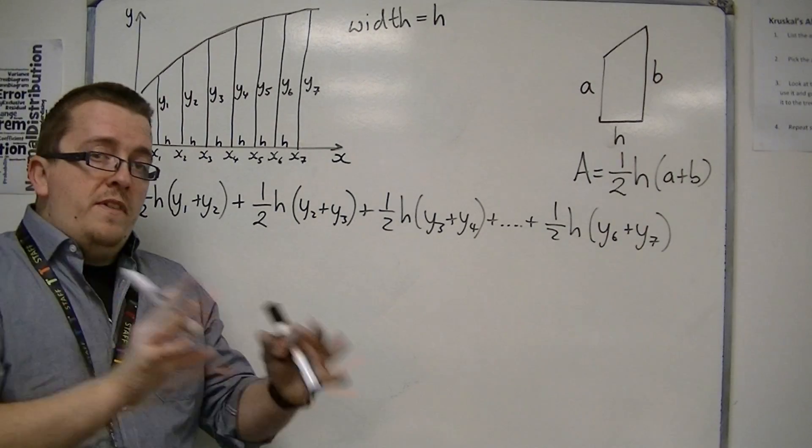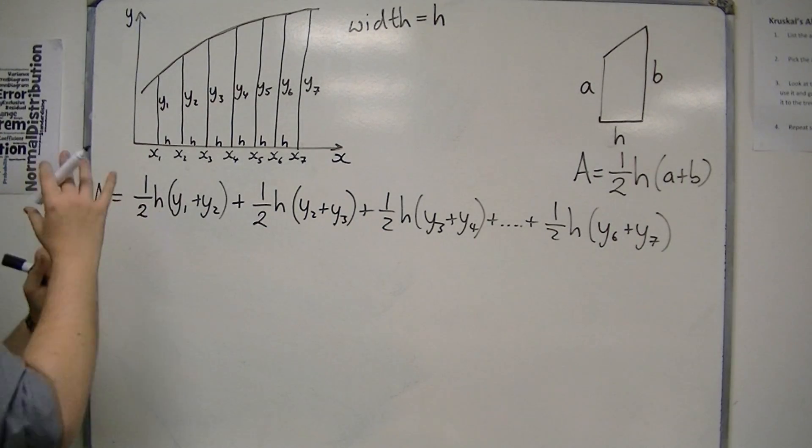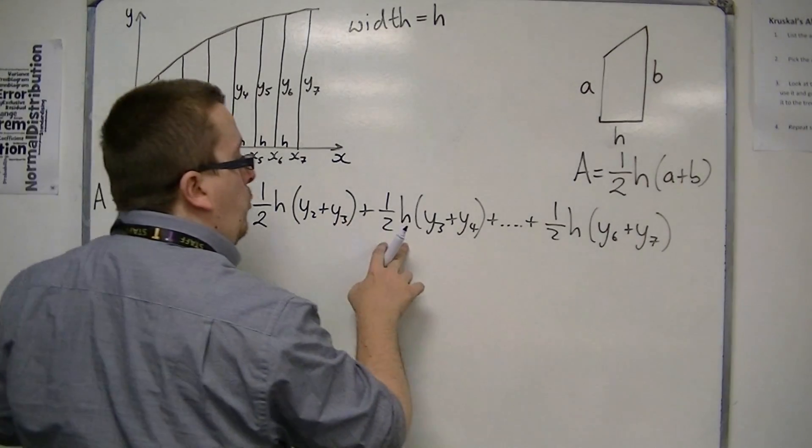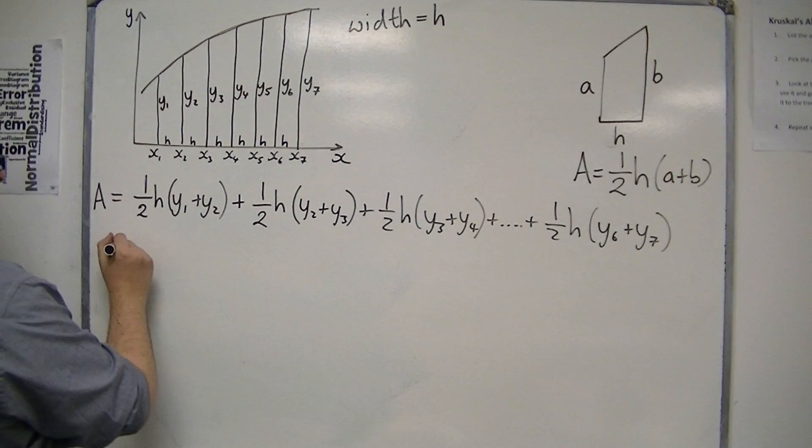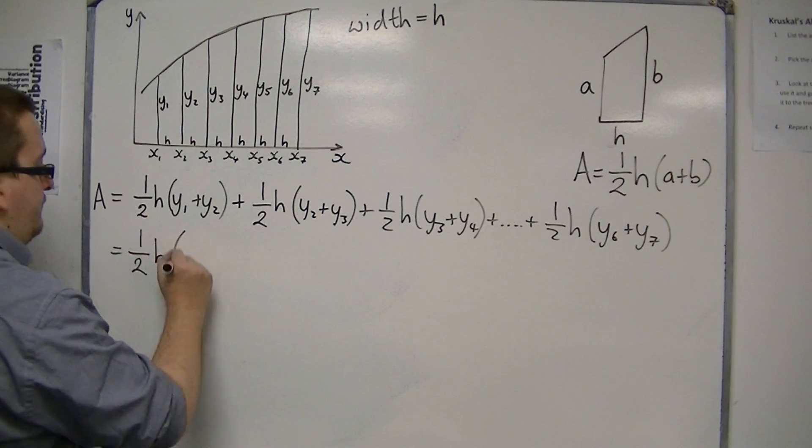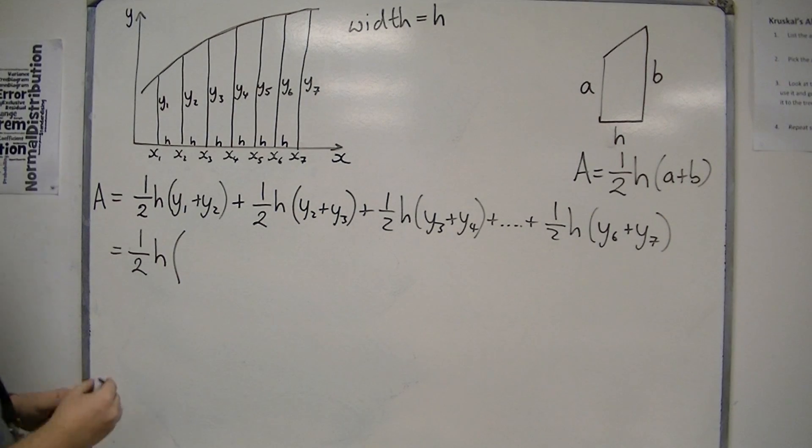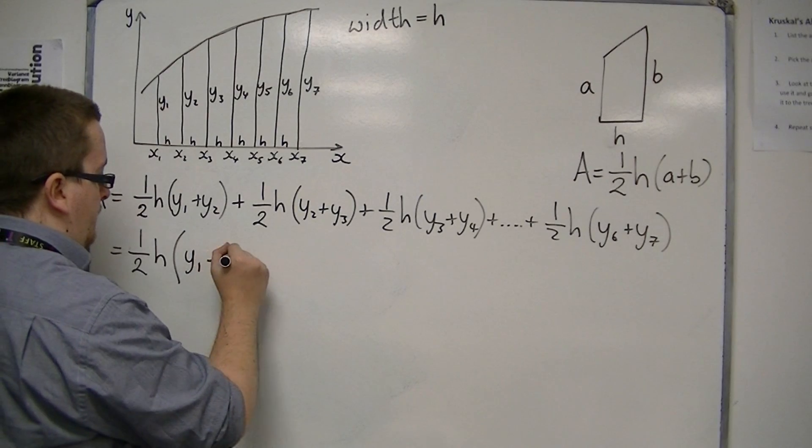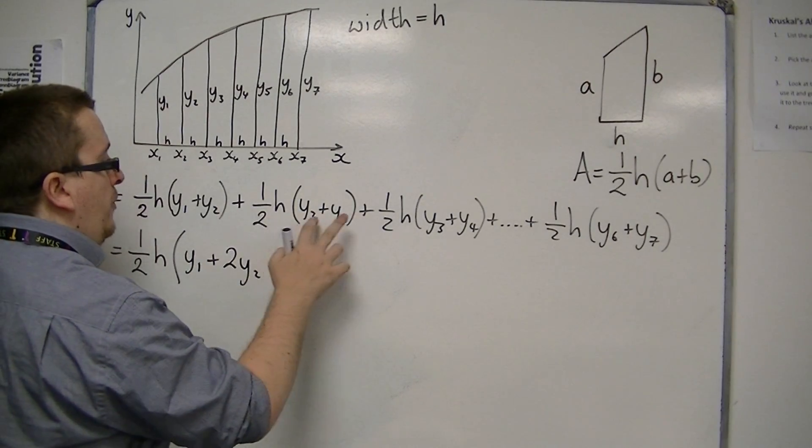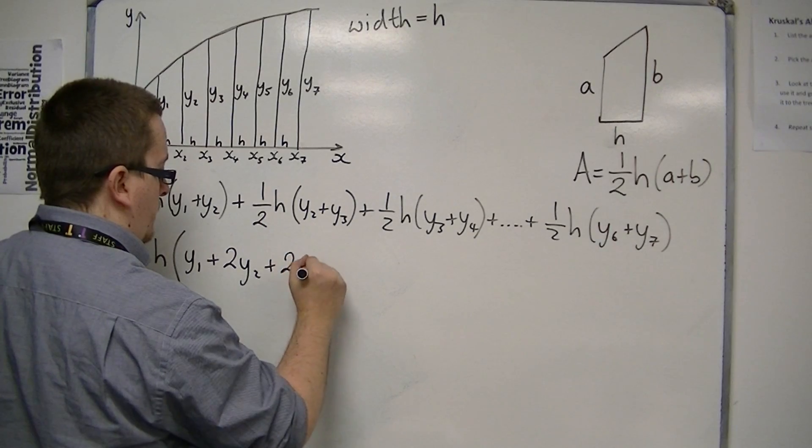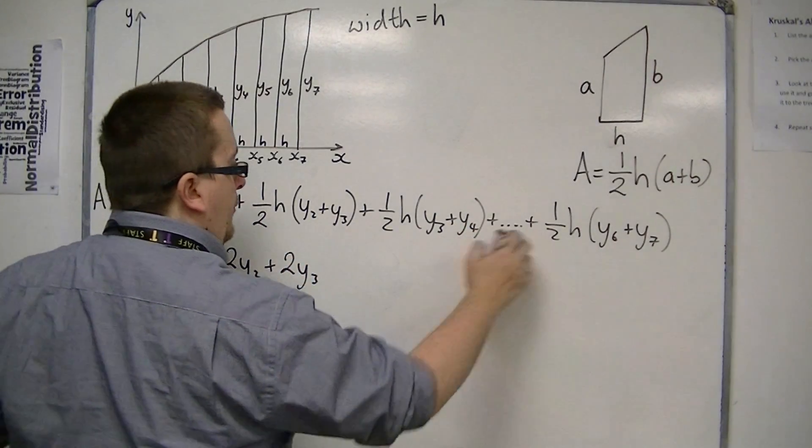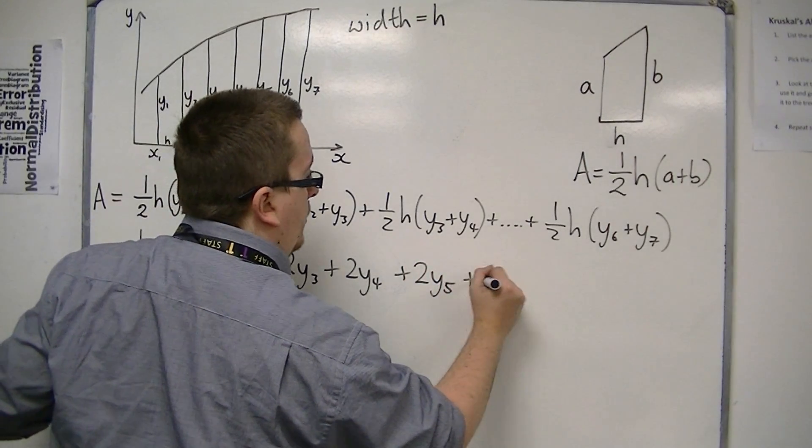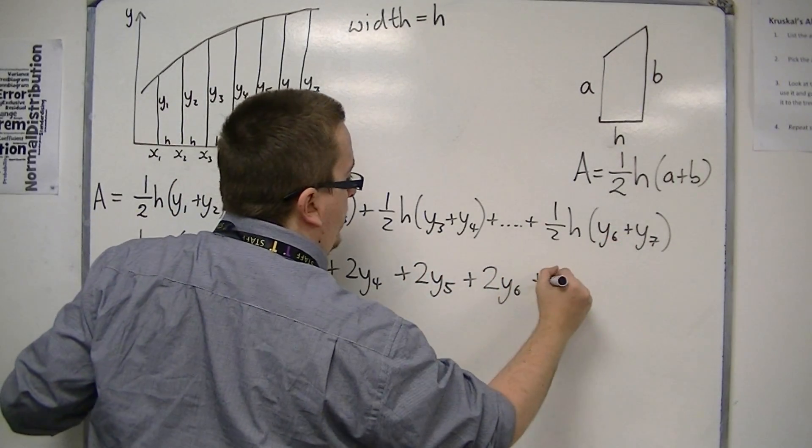Now what I'm then going to do is to simplify this, I'm going to factorize it. So I can see that each has a factor of one-half h in common, and so I can take that outside the front. And inside I'm going to have this y1, I'm going to have two lots of y2, two lots of y3, two lots of y4, two lots of y5, two lots of y6, and then one lot of the y7.